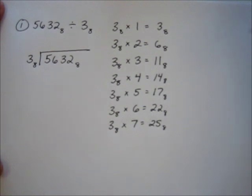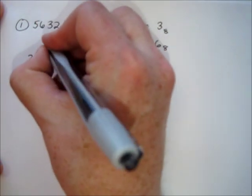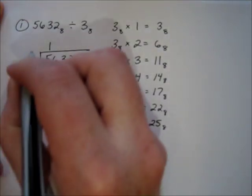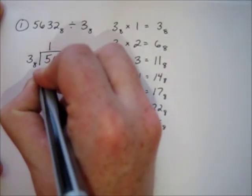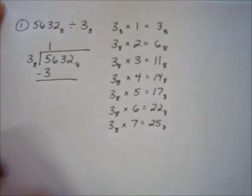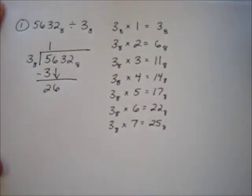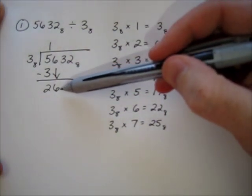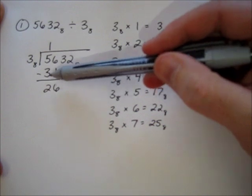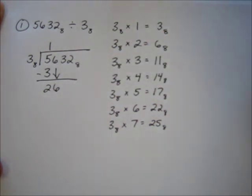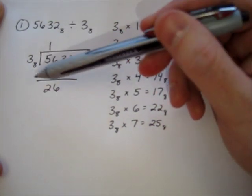Now we can begin the actual division. 3 goes into 5 once, no matter what base you're in. 1 times 3 is 3. Subtract and bring down. Here's where you have to be extra careful: you are in base 8, so this is not 26, this is 2 6.